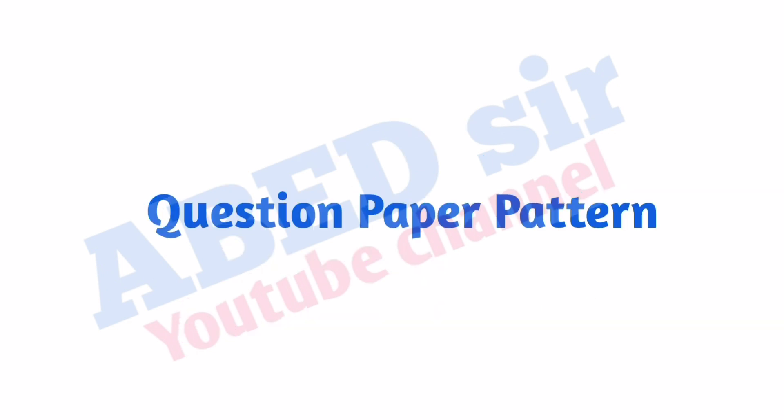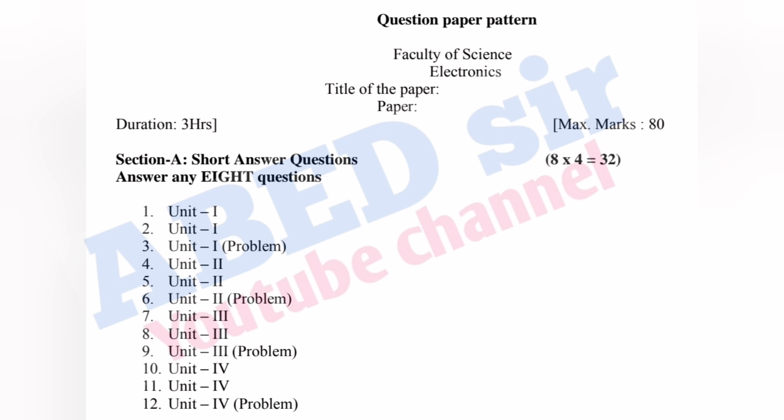Before that, on screen you can see the question paper pattern. This question paper has two parts: part A and part B. In part A, short questions will be asked — three questions from each unit, total 12 questions will be asked. Out of 12, you have to answer any eight and each one carries four marks. So eight parts are 32 marks you will get from part A.